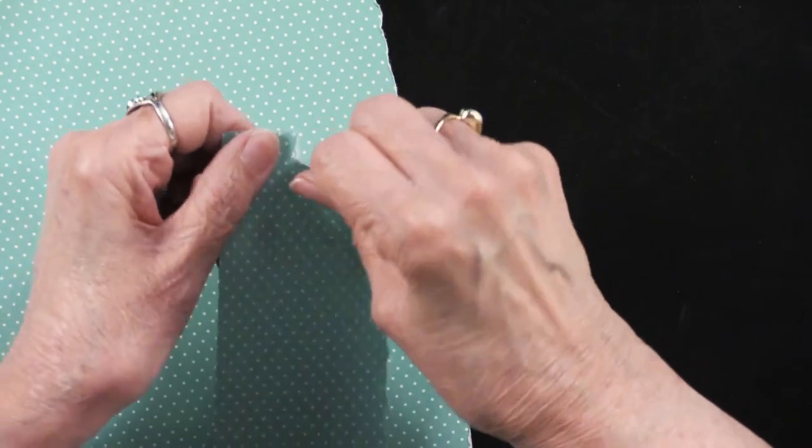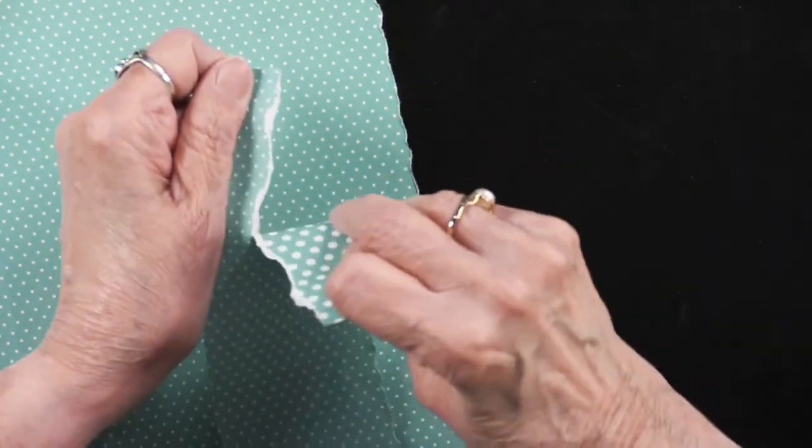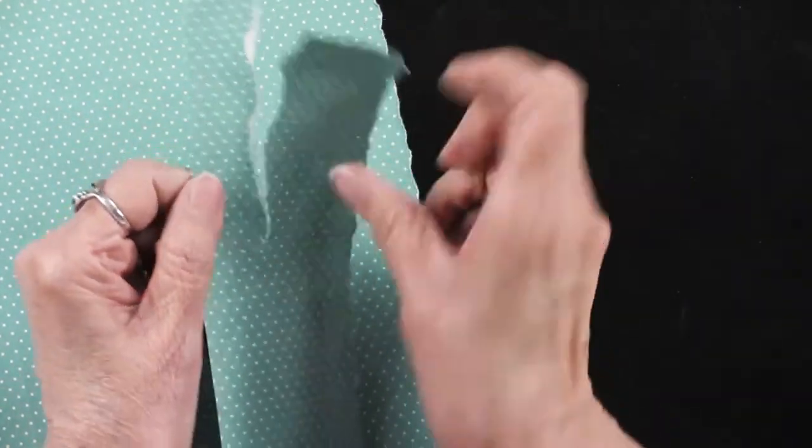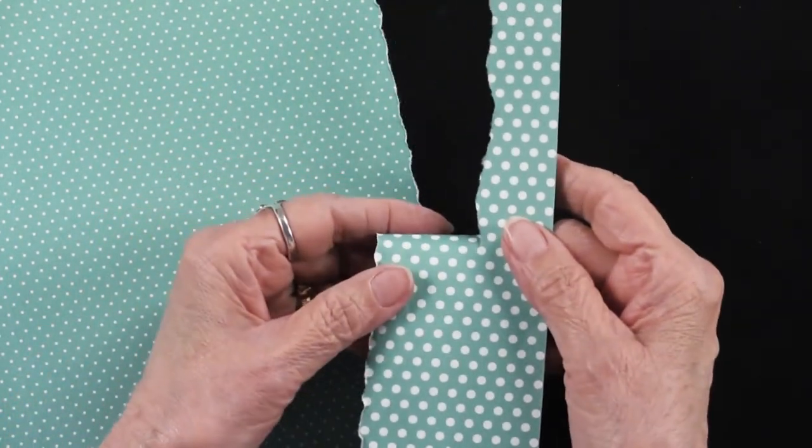See, if I had torn it like this, I would also get a white edge. Or, on the other side, I would not have a white edge.